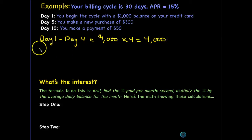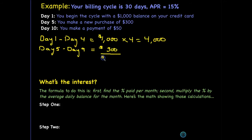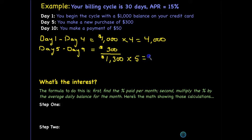On day five, something happened — you made a new purchase of $300. So from day five through day nine, you added an additional $300 to your balance, meaning that instead of having a balance of $1,000, you had a balance of $1,300. Day five through nine is five days, so we multiply $1,300 by five and we get $6,500.